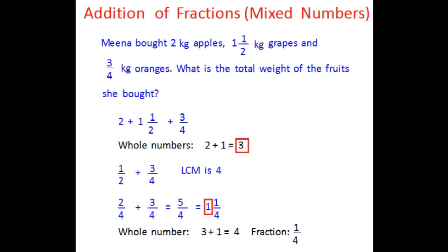We already had the whole number 3 from the previous addition. We take the whole number 1 from the improper fraction conversion and add it to 3, giving a whole number of 4, with the fraction 1 over 4. So the total weight she is carrying is 4 and 1 over 4 kilos. This is how you can apply the addition of fractions and mixed numbers to word problems.